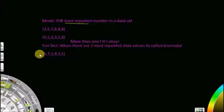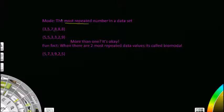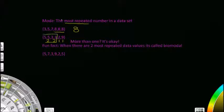Now let's move on to mode. Mode is the most repeated number in a data set — the number that appears the most. Looking at the first example: you have 13, 15, 17, and three 8s, so the mode is 8. In the next example you have two 5s, two 3s, and one 2 and one 9 — so both 5 and 3 are repeated the most.